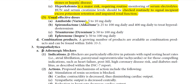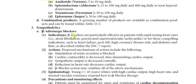Usual effective doses: amiloride 5 to 10 mg daily; spironolactone 25 to 100 mg daily, up to 400 mg daily to treat hyperaldosteronism; triamterene 50 to 100 mg daily; eplerenone 50 to 100 mg daily. A growing number of these products are also available as combination products, as mentioned in Table 33.5.